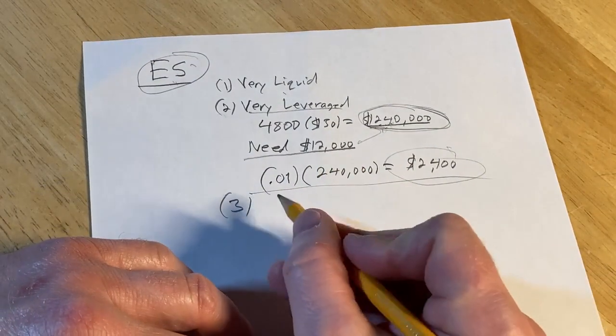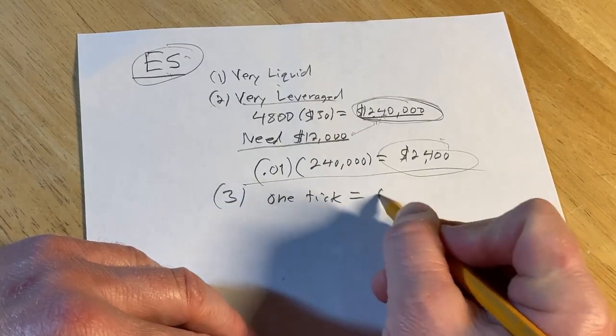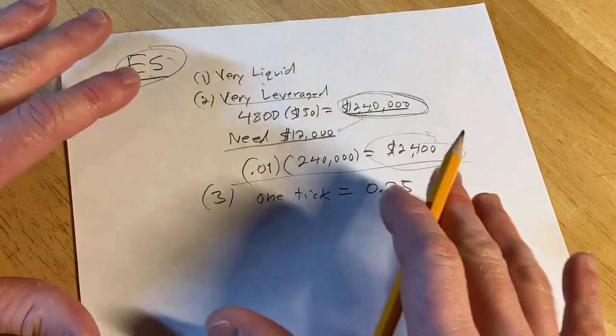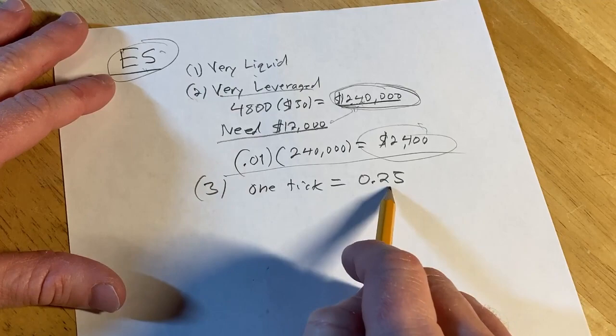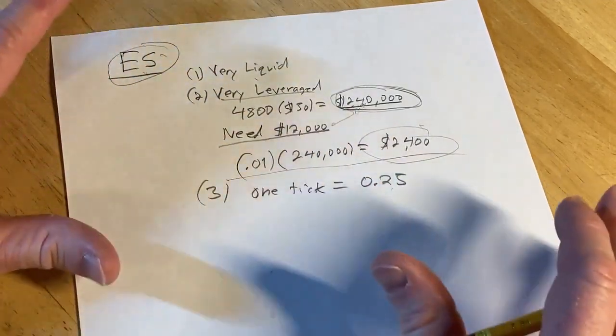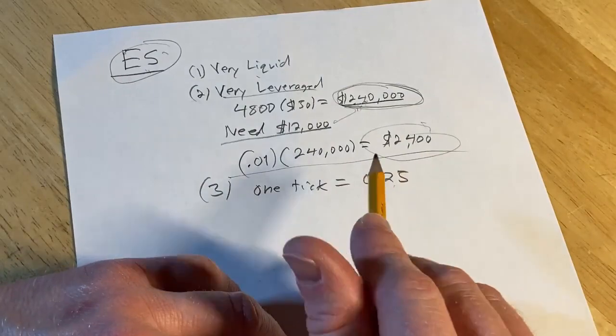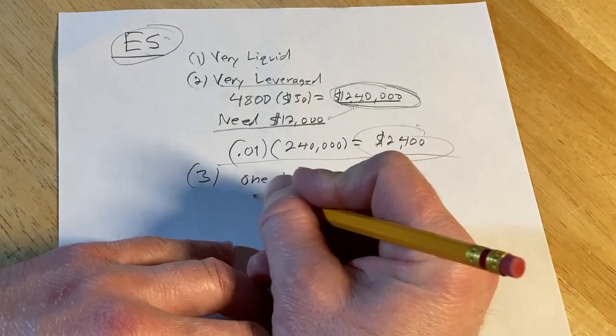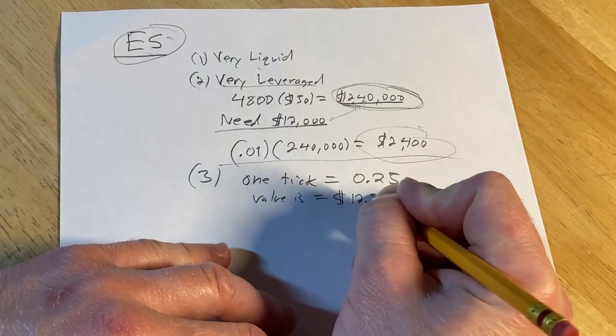A tick is a quarter point, so it moves. So one tick, the way it moves. So something that's interesting about futures contracts is that they all use kind of like a different numerical system, like the way they move. Like this one moves in quarter points. If you look at treasury futures, there's fractions involved. There's a fractional notation that is involved in the pricing. So all kinds of different types of mathematics, which I think is quite interesting. So one tick is 0.25 and that's equal to this, the value, the value is $12.50.